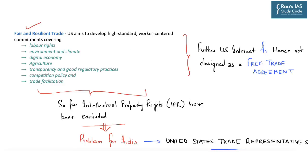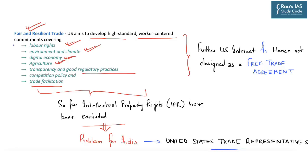Regarding the first pillar, which is fair and resilient trade, the article says that the US aims to develop high-standard work-centered commitments covering various issues: labor rights, environment and climate-related issues, issues of digital economy, agriculture, transparency and good regulatory practices, competition policy and trade facilitation. It is here where the author says that in some of these aspects such as labor rights, environment and climate change, digital economy particularly, and also agriculture and transparency and good regulatory practices, the Government of India may face certain problems.